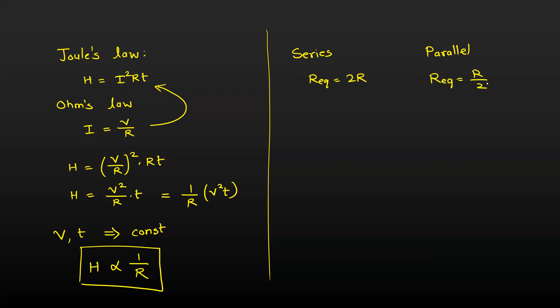So if you want more heat, we need less resistance. And in which combination has a lesser resistance, it is the parallel combination. So in parallel combination, more heat will be produced. So that's it.